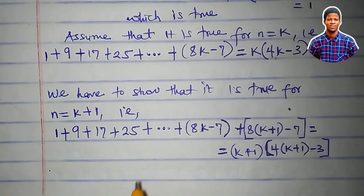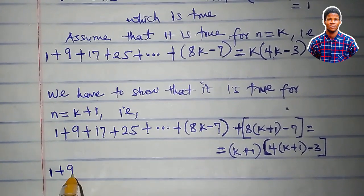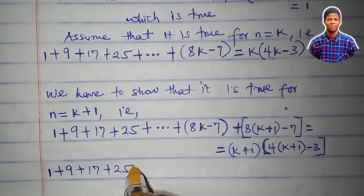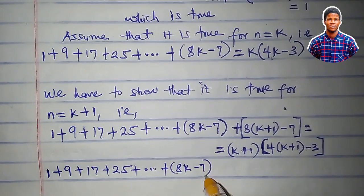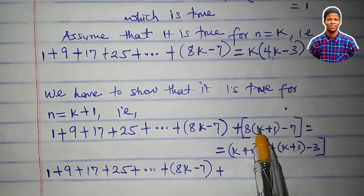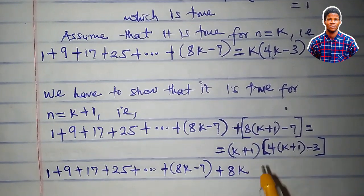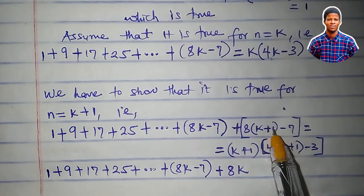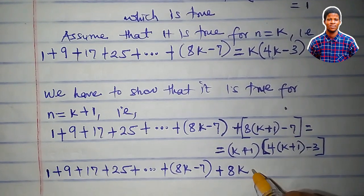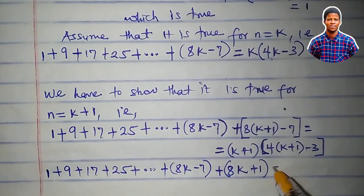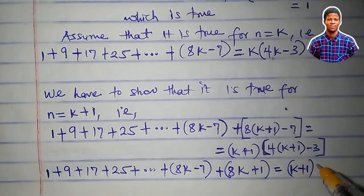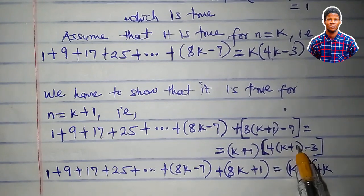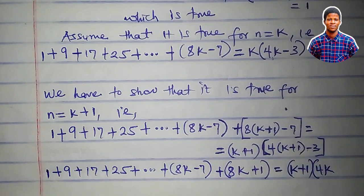Let's simplify. 1 plus 9 plus 17 plus 25 plus 8k minus 7, then plus 8 times k plus 1 minus 7 equals 8k plus 8 minus 7 equals 8k plus 1. And which is equal to k plus 1 in brackets, times 4k plus 4 minus 3, which is 4k plus 1.